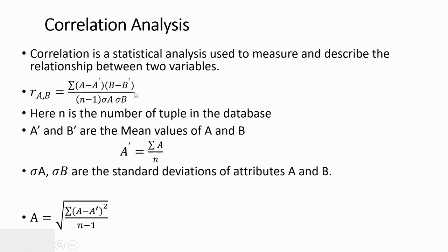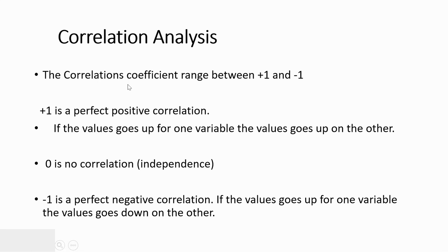Once you simplify the correlation equation, the correlation coefficient will provide values between plus 1 and minus 1. If you get a positive value, that indicates positive correlation. Plus 1 means positive correlation — if attribute A's value increases, attribute B also increases. If the result is 0, there is no correlation among the two attributes, indicating they are independent of each other.